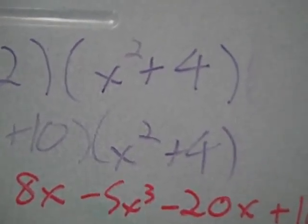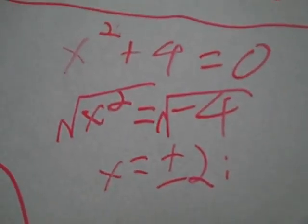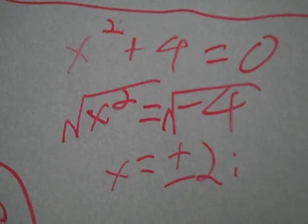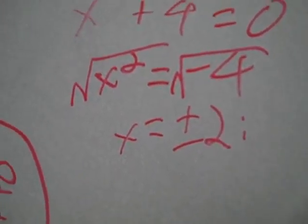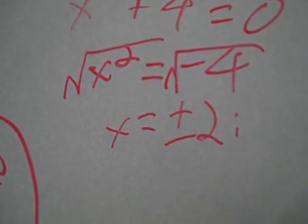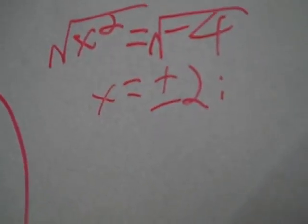For x squared plus 4, x squared plus 4 equals 0. You subtract 4 from both sides, then you get x squared equals negative 4. You take a square root from both sides, and you get x equals positive negative 2i. Thank you for watching.